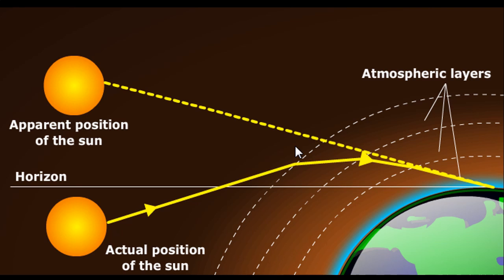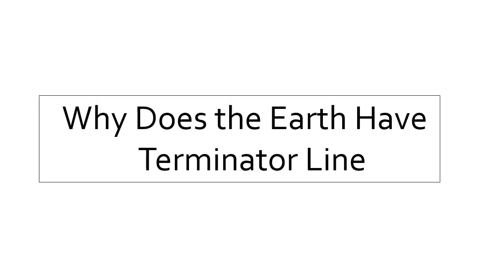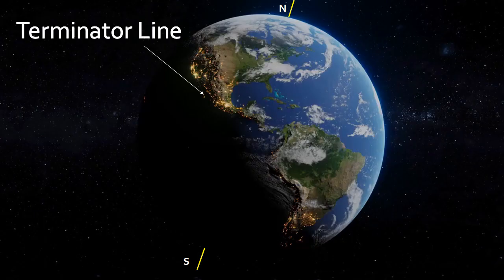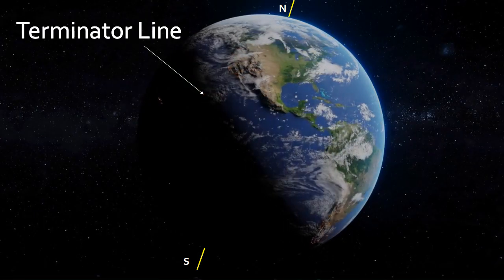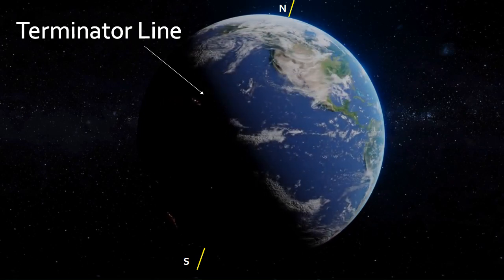The Earth's atmosphere bends sunlight by half a degree, which is about 37 miles. Why does the Earth have a terminator line? The terminator line is a result of the Earth's rotation and its position from the sun.